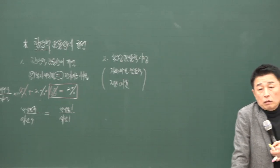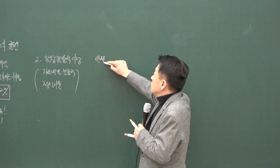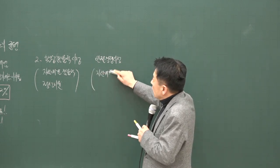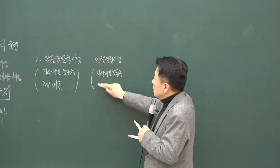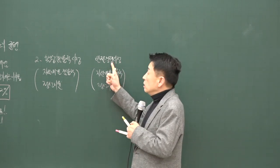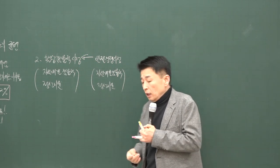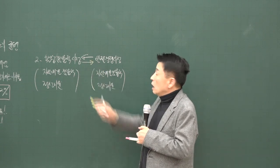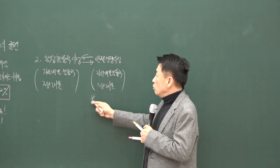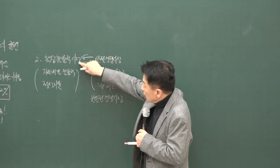할당 효율적 시장에서 초과 이윤은 얻을 수 없습니다. 우리가 알고 있는 완전 경쟁 시장도 자원배분이 효율적이고 정상 이윤만 얻는 시장이기 때문에 할당 효율적 시장의 성격을 가지고 있어요. 그런데 할당 효율적 시장이 완전 경쟁 시장만을 지칭하는 것은 아닙니다. 불완전 경쟁 시장도 할당 효율적 시장이 될 수 있어요.